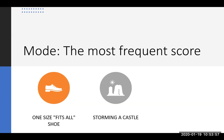Sure enough, it worked — they stormed the castle and won. Notice that the mean wouldn't have worked as well, because the person who saw 90-something bricks would have pulled the average up, making the ladder taller than it needed to be. The mode was a great example of using the most commonly selected value from the data, rather than averaging everything out.